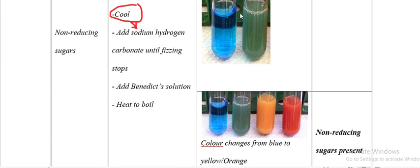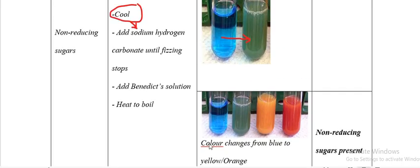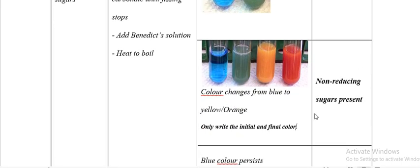The observations for non-reducing sugars: colour changing from blue to green, or from blue to green to yellow to orange. If that is the case, reducing sugars will be present. You should write the final colour — if it is yellow or orange, just write one colour.